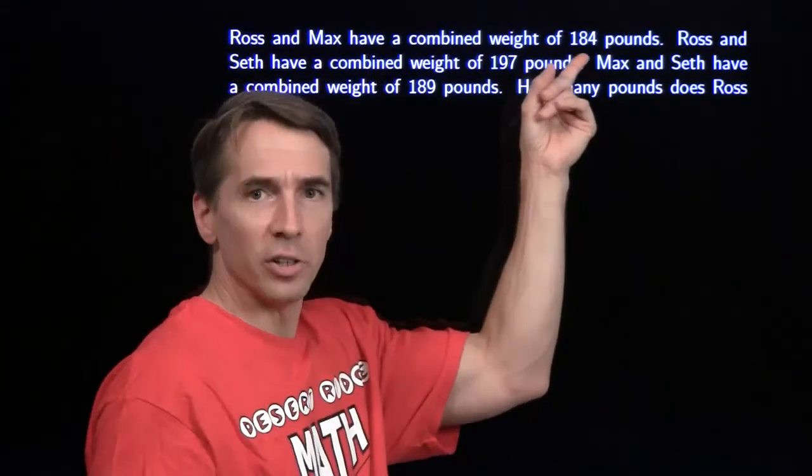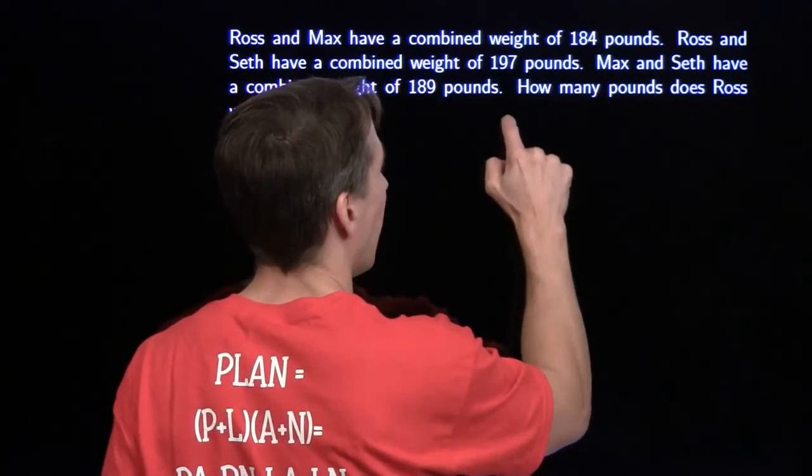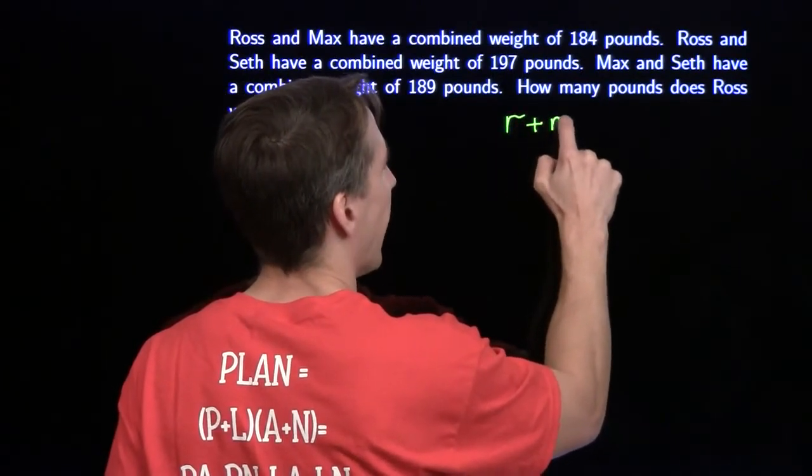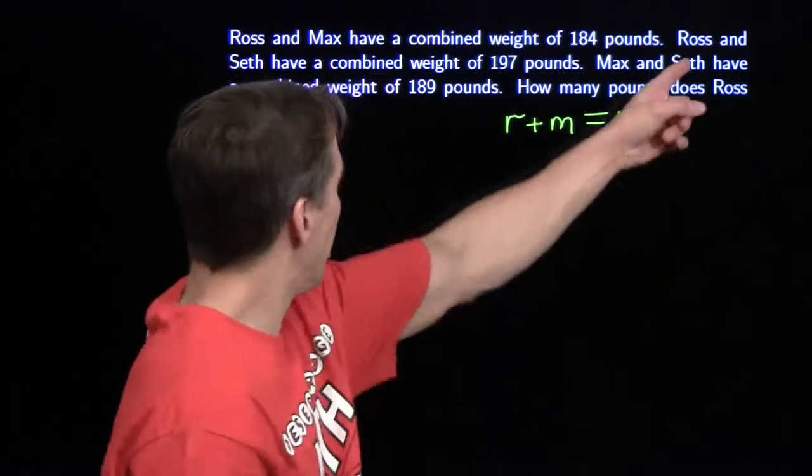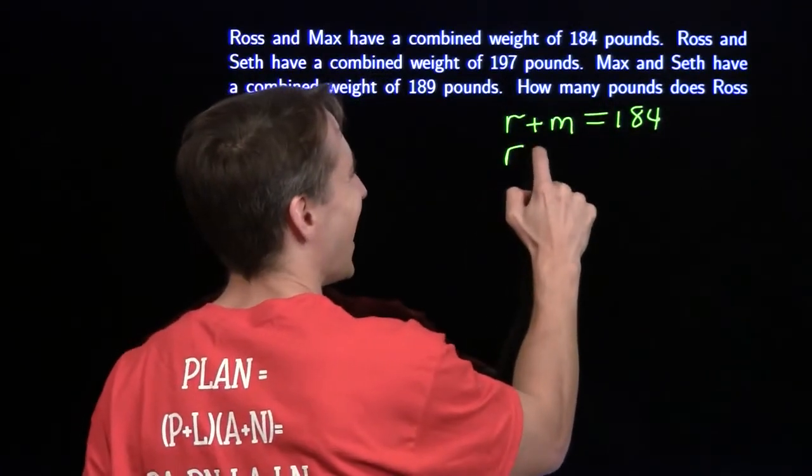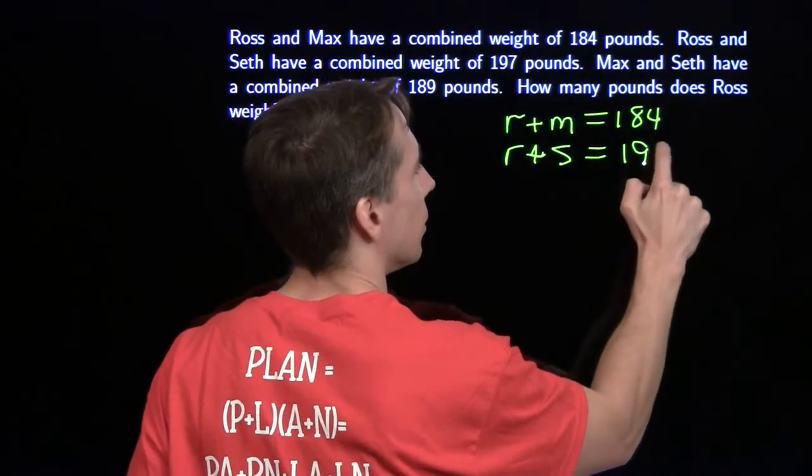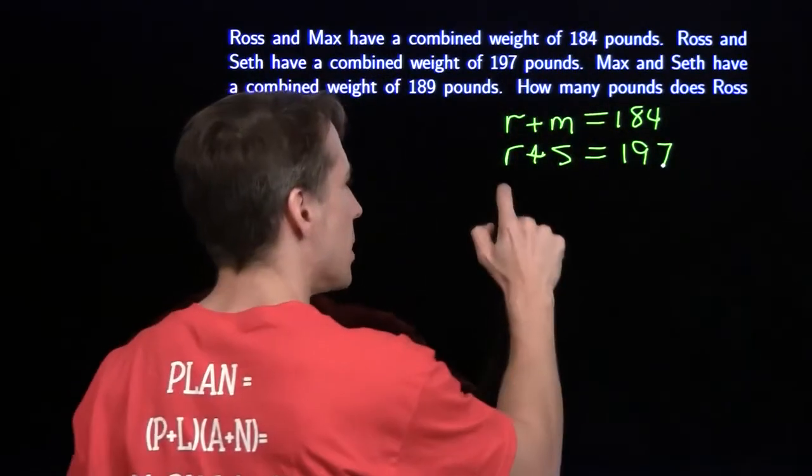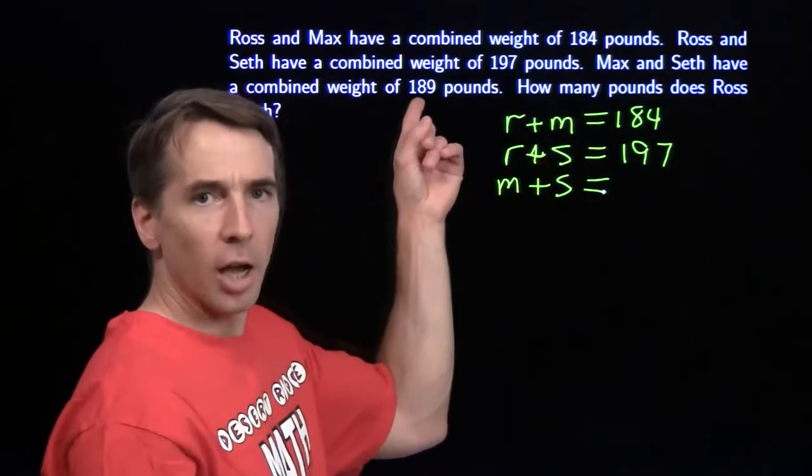If Ross and Max combined weight is 184 pounds, we're going to use the obvious variables here. We're going to say Ross is R combined with Max M gives us 184. Then Ross R combined with Seth S gives us 197.